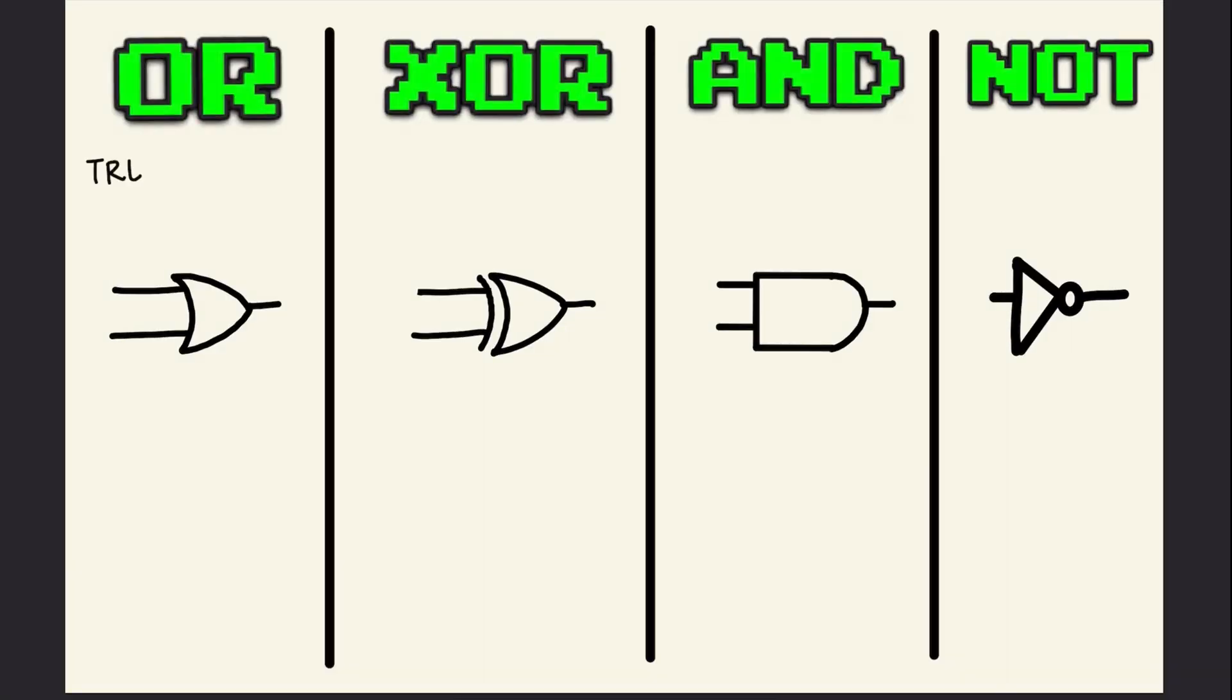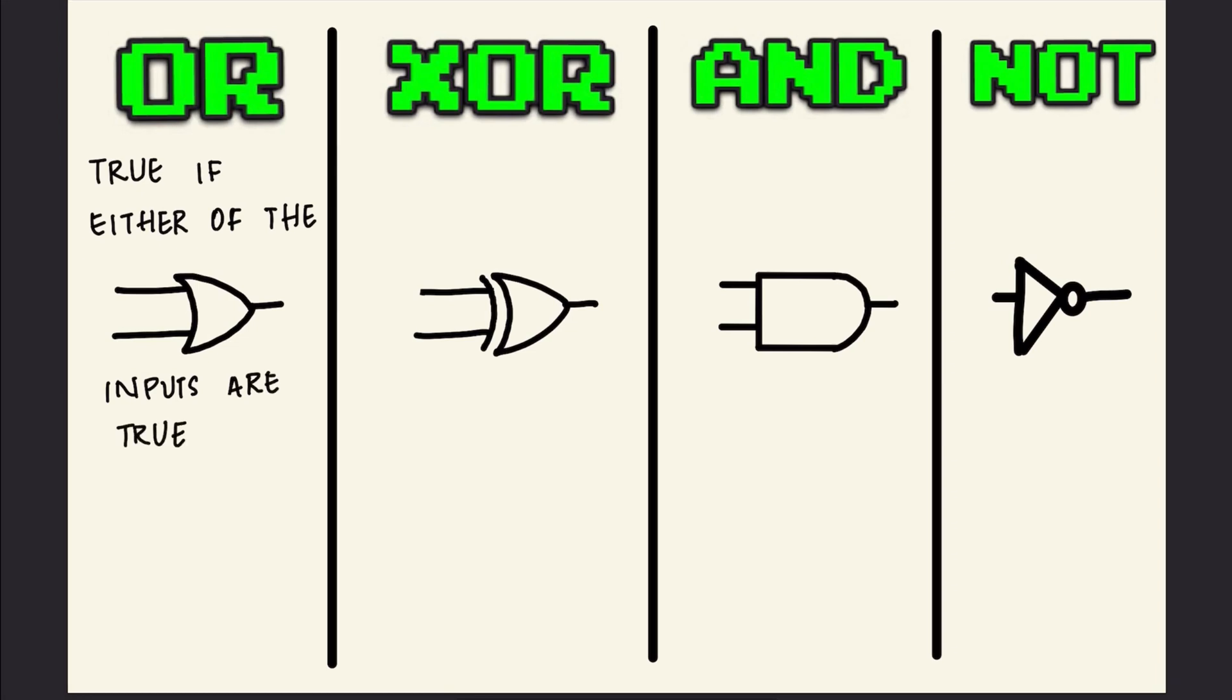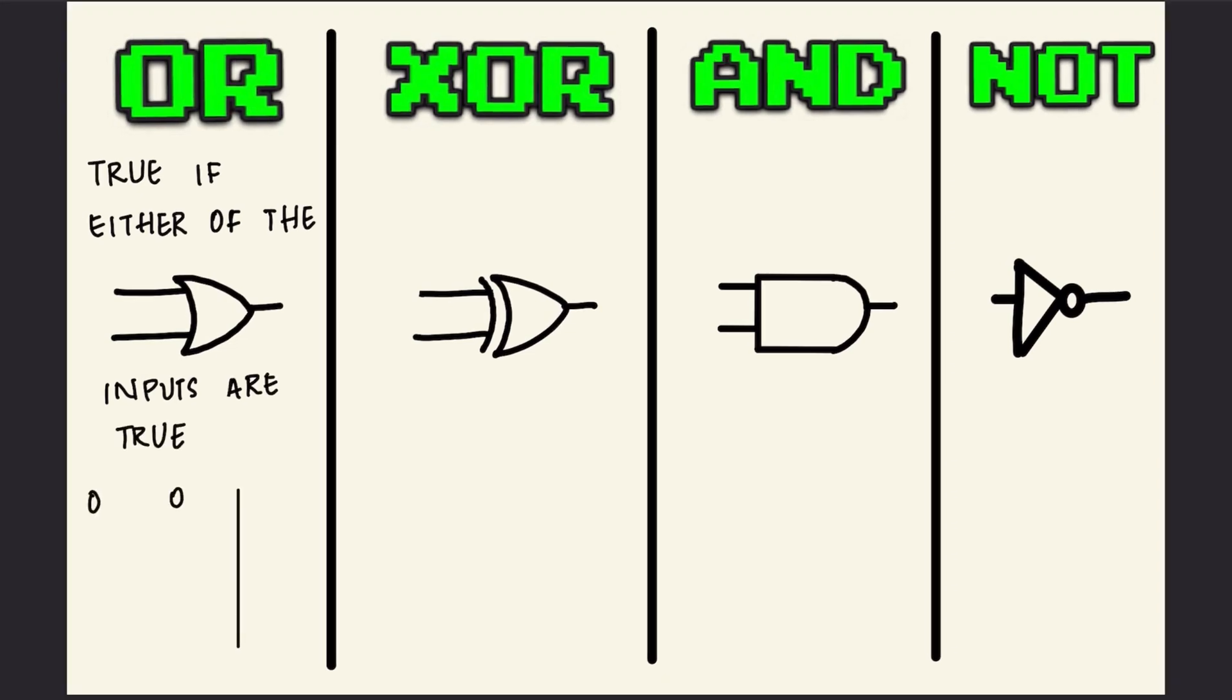The bitwise OR returns true if either of its inputs is true. As we already know, 0 stands for false and 1 stands for true. So 0 or 0 is 0, 0 or 1 is 1, 1 or 0 is 1, and 1 or 1 is 1. The exclusive OR returns true if and only one of its inputs is true and the other is false.